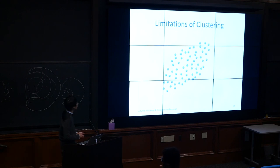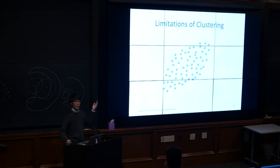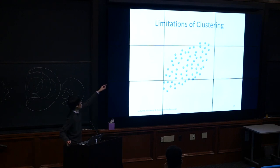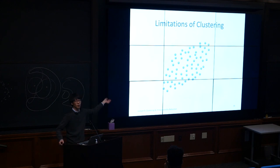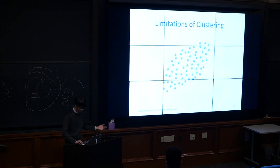What if you have one big oblong blob of data that can't be meaningfully clustered? Clustering won't tell you anything useful — it'll just arbitrarily split it. Instead, we talk about Principal Component Analysis (PCA). Importantly, PCA is not a machine learning method — it predates machine learning by decades and is a core linear algebra concept.